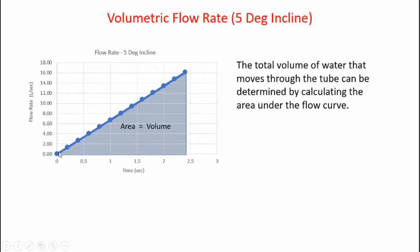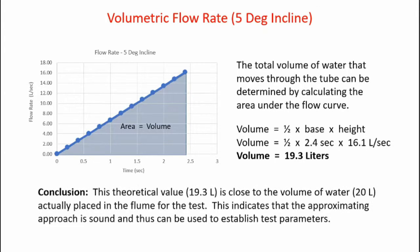The total volume of water that moves through the tube can be determined by calculating the area under the flow curve. Here I have my flow curve. It makes a nice triangle and this area represents the total volume moving through the pipe. The volume is one half base times height, which is the area of a triangle and comes out to be 19.3 liters. The theoretical value of 19.3 liters is close to the volume of the water, 20 liters, which is actually placed in the flume for the test. This indicates that the approximating approach is sound and thus can be used to establish test parameters.